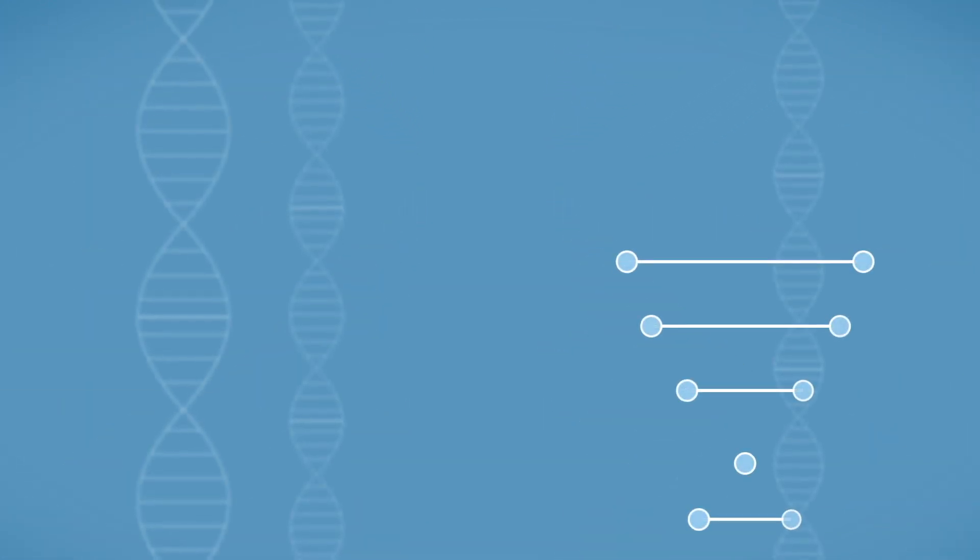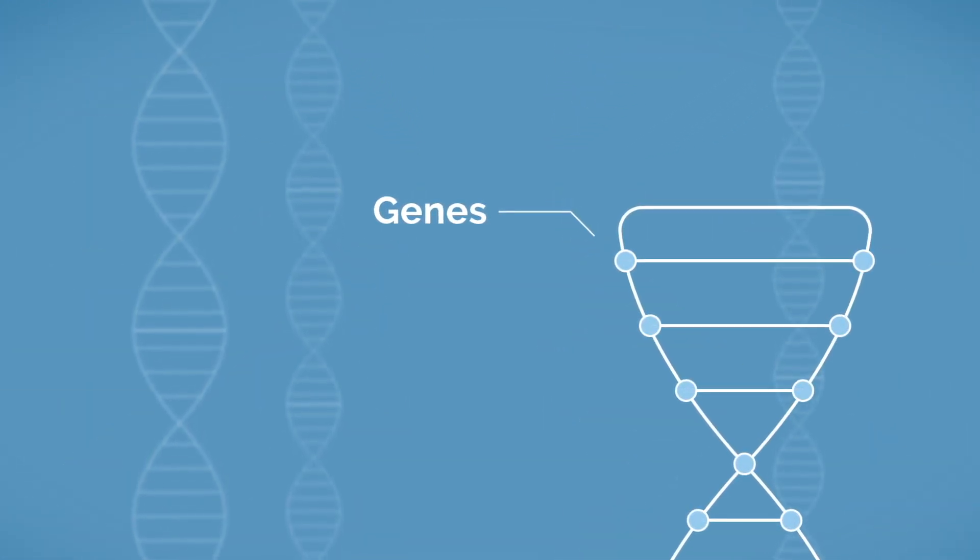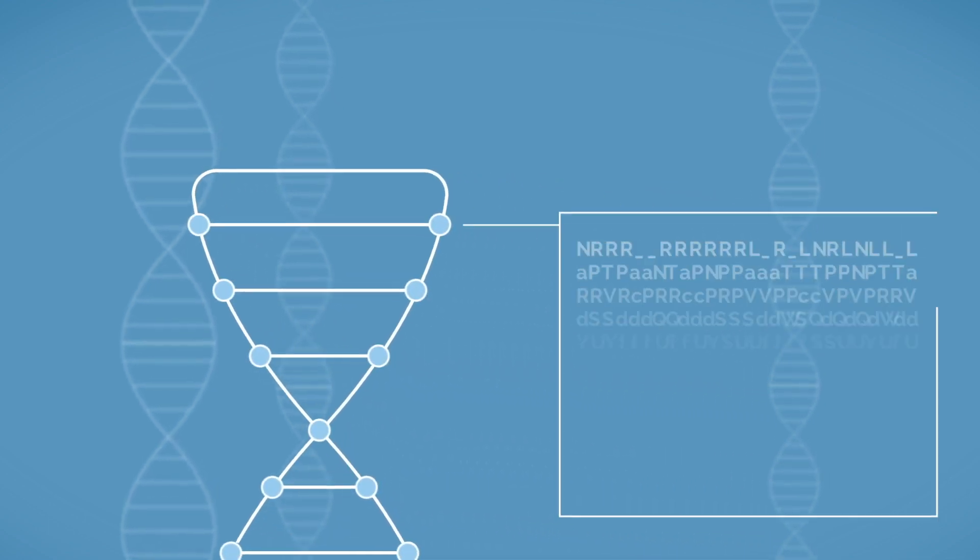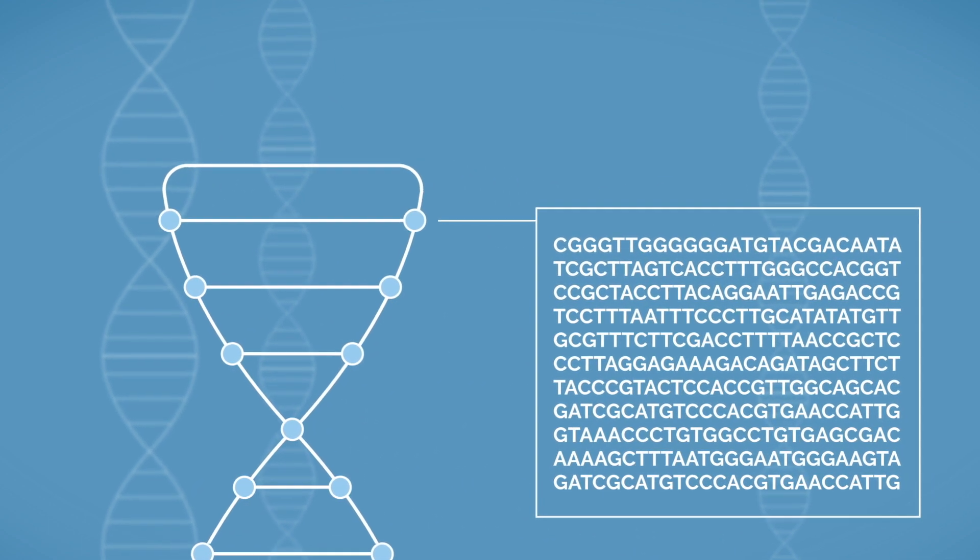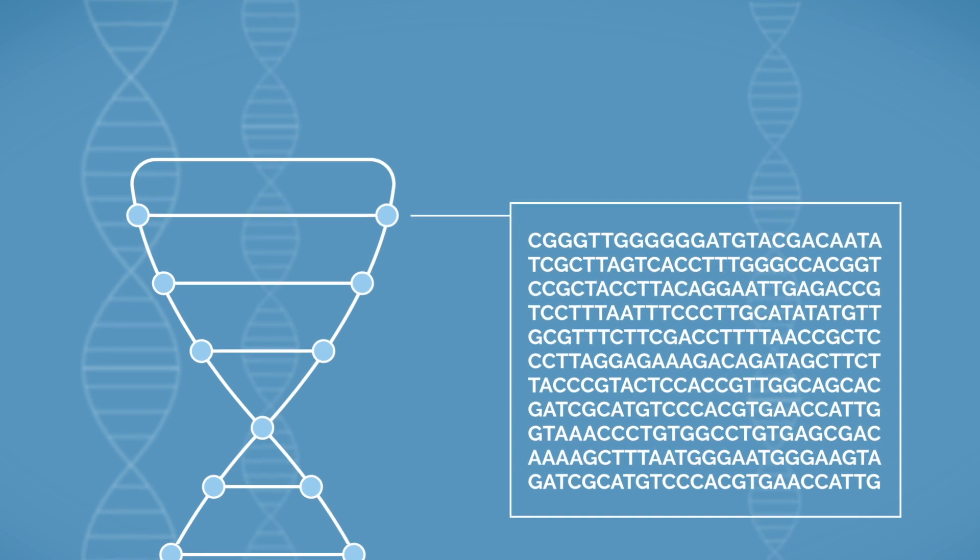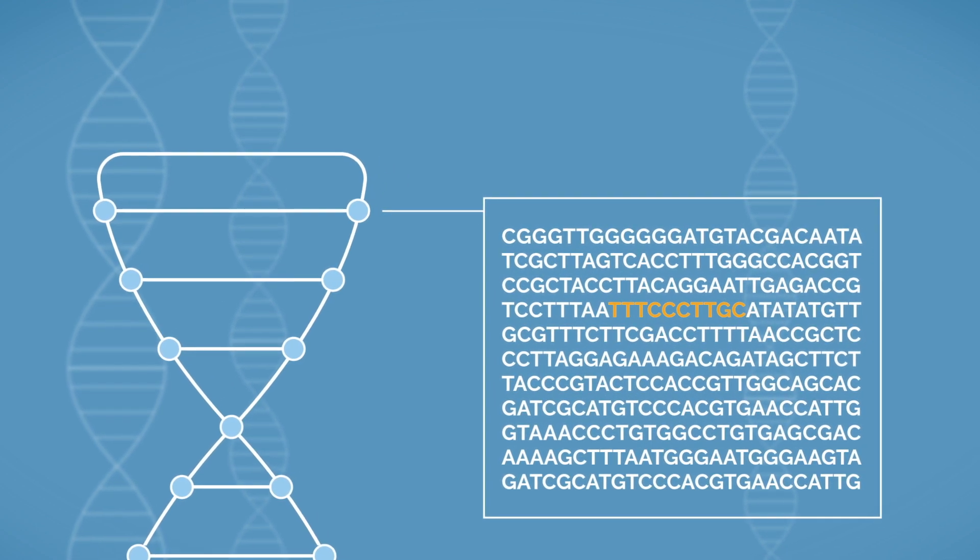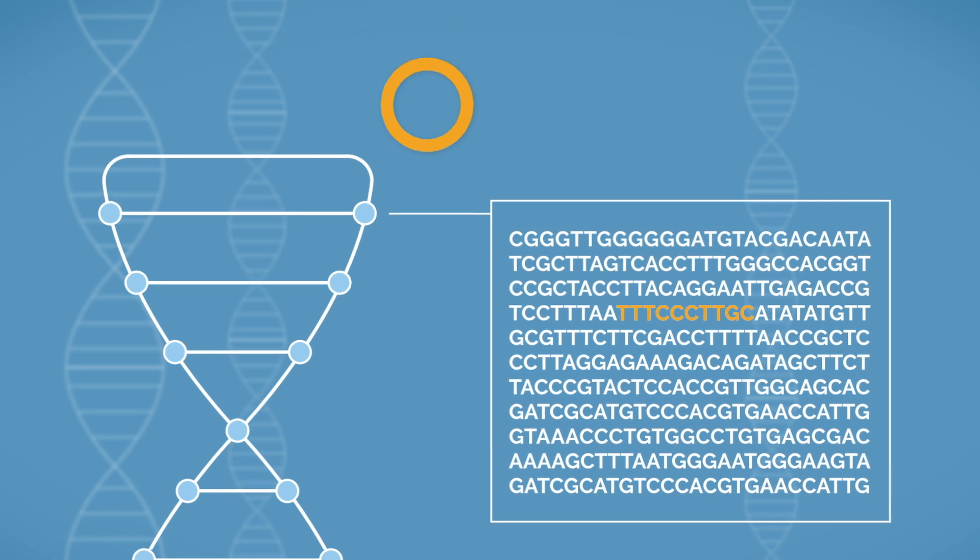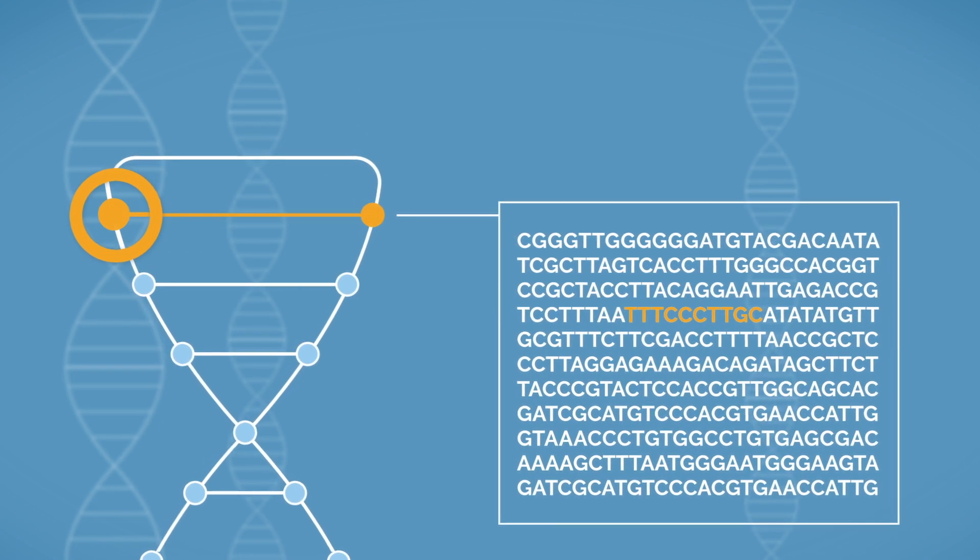Our chromosomes contain smaller units of DNA called genes, which are made up of a string of letters that act as instructions for how our bodies grow, develop, and function. You can imagine, if there was a spelling change in an instruction manual, it could make things difficult to understand.